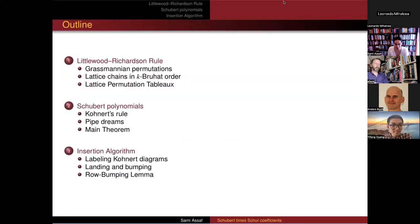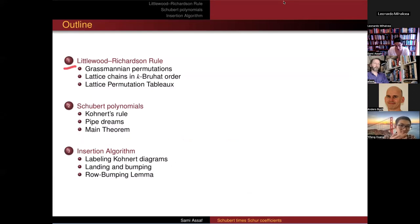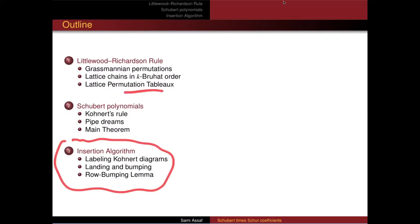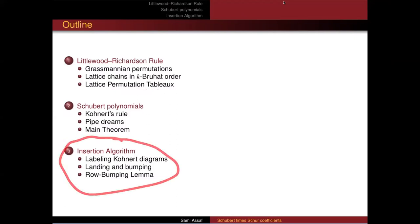Here's the plan of my talk. We'll have a break right here, which is actually the halfway point. The first thing I'll tell you about is what I did during COVID — I played around and found a rule for multiplying a Schubert polynomial times a Schubert polynomial. In the second part of my talk, I'll tell you about Schubert polynomials and then the insertion algorithm that proves the conjecture. This part is all joint with Nantel.